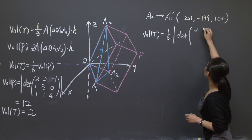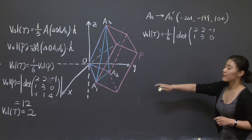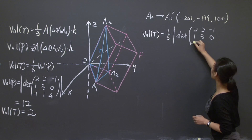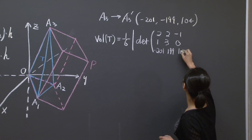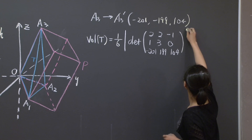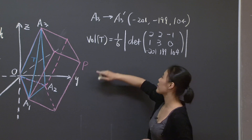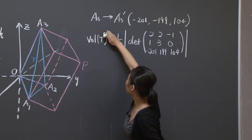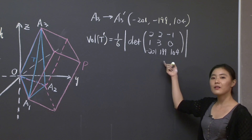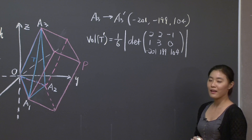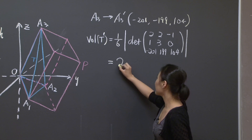We copy down the coordinates of the three vertices. The first row is [2, 2, -1], the second is [1, 3, 0], and the third — the new A3' — is [-201, -199, 104]. If you compute this determinant explicitly, the answer is 2 again.